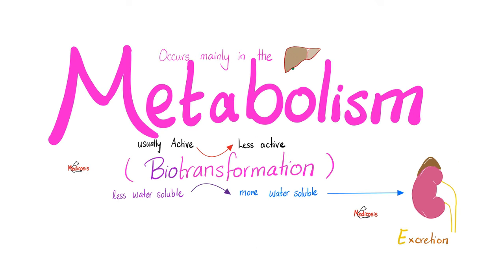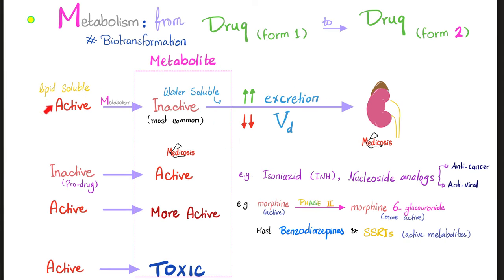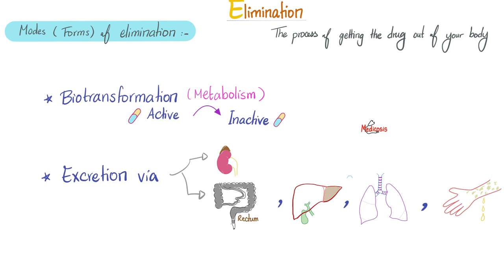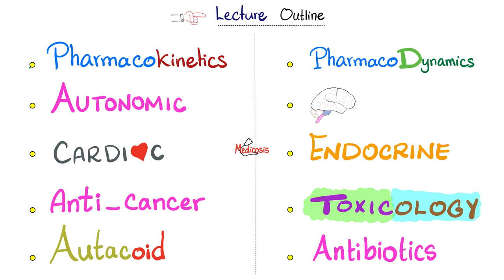A quick note on metabolism, also known as biotransformation: a biological transformation — changing from one phase to another. This could be active drug to inactive drug (or less active drug), inactive to active (a pro-drug, given in inactive form and later activated by your body — a classic example is isoniazid), active to even more active (such as morphine becoming morphine-6-glucuronide), or the dreaded metabolism of turning the active into toxic. The E of ADME is elimination — taking this inactive drug and dumping it into the urine, stool, or bile; you can breathe it out or sweat it out.